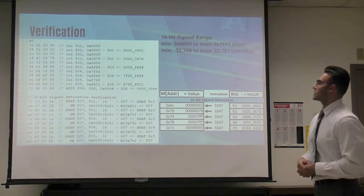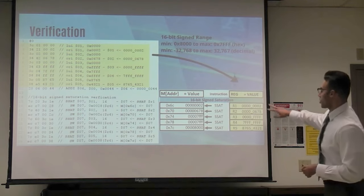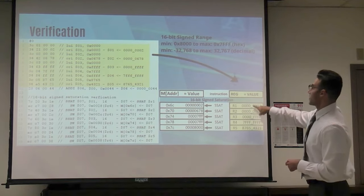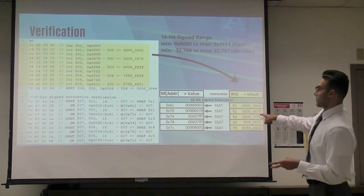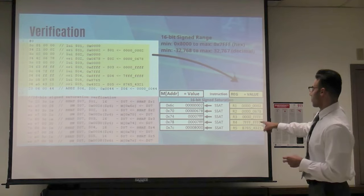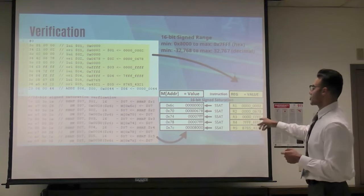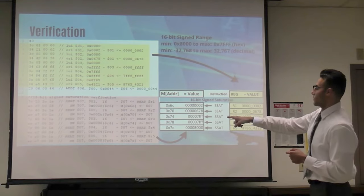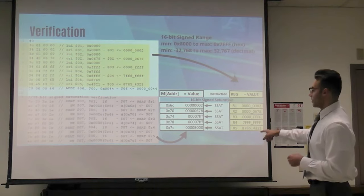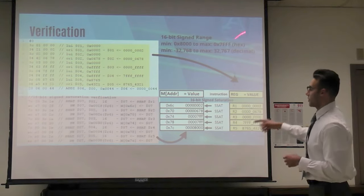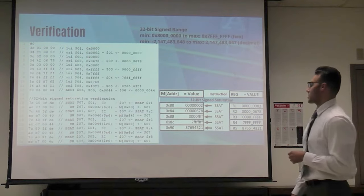For 16-bit signed saturation, R1 and R2 are passed through because they fall within the range — R2 is less than 16-bit and is a positive number. R3 and R4 are positive but greater than 16-bit, so they are saturated and written back. For R5, since it's a negative number lower than the minimum range, it goes back to the address location saturated.